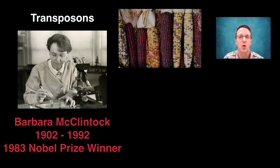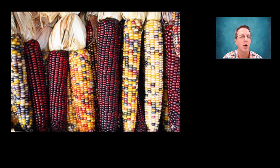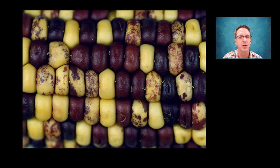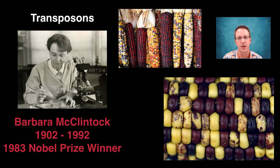She was working with Indian corn, which comes in a beautiful array of colors, and she noticed that while most kernels were completely colorless or colored, some of the kernels had a mottled appearance, and she was able to eventually demonstrate that this was due to a piece of DNA that was able to jump in and out of the gene that coded for kernel color. So how does that exactly work?